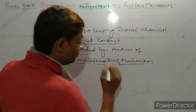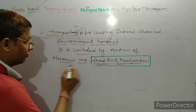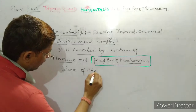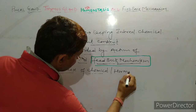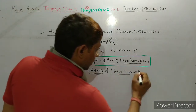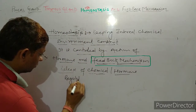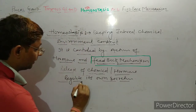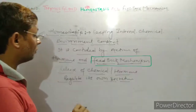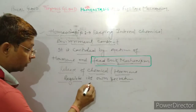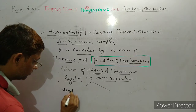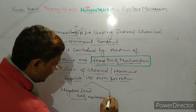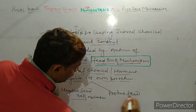Feedback mechanism क्या है? Feedback mechanism means the release of a chemical or hormone regulates its own secretion. यह कम है तो ज्यादा करेगा, और ज्यादा है तो कम करेगा. Feedback mechanism is of two types: one is negative feedback mechanism and positive feedback mechanism.